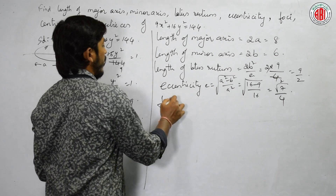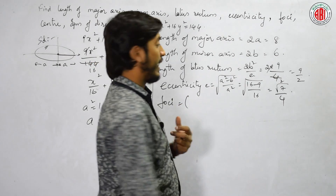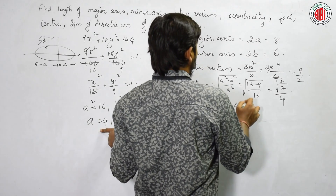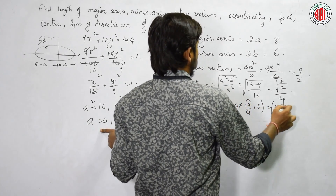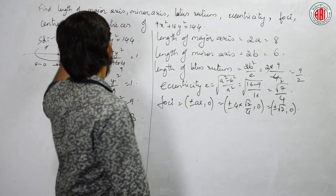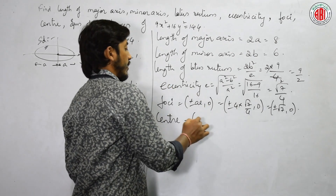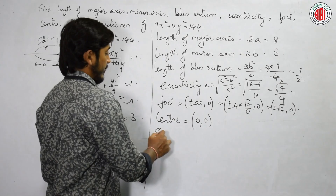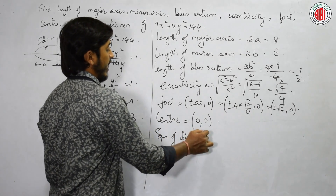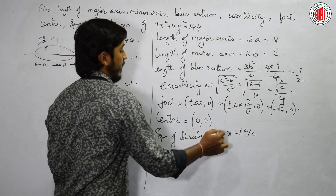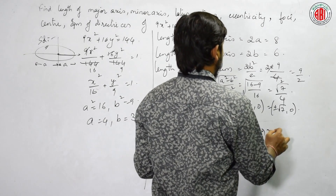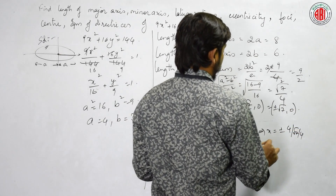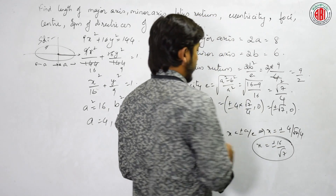Next, focus: for this type of ellipse it is (±ae, 0) = (±4×√7/4, 0) = (±√7, 0). Center: for this standard form, the center is (0, 0), the origin. Equation of directrices: we derived x = ±a/e = ±4/(√7/4) = ±16/√7.